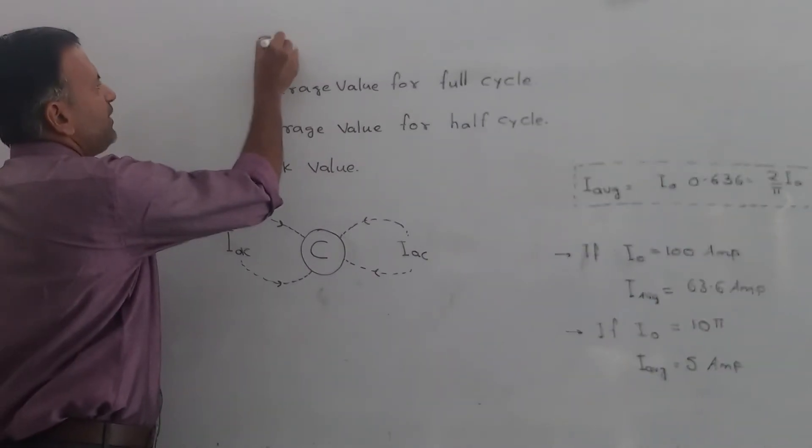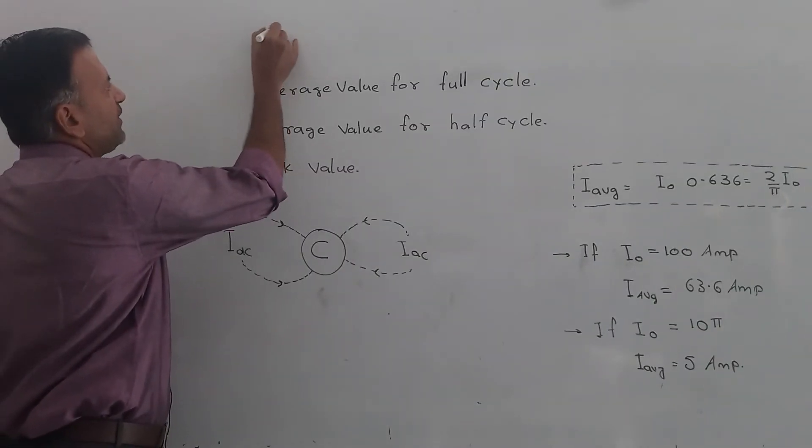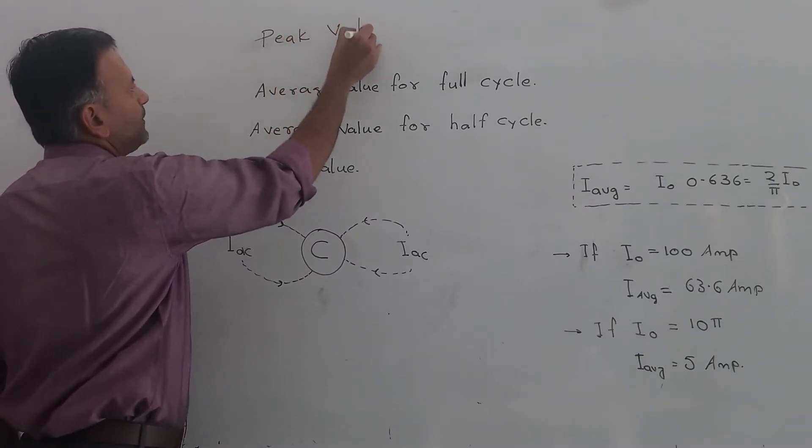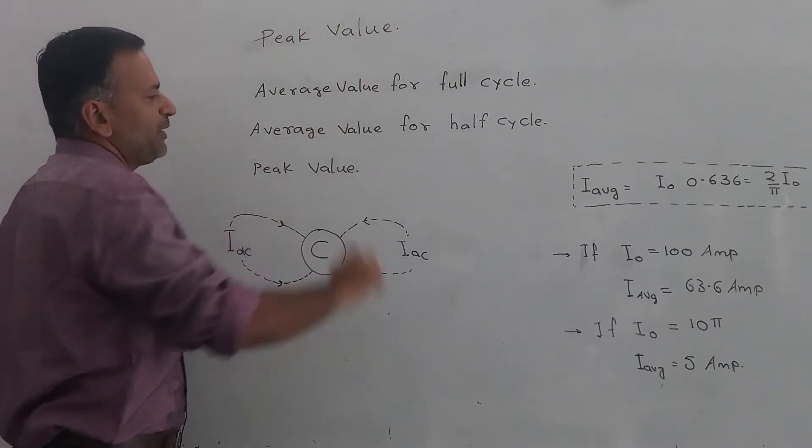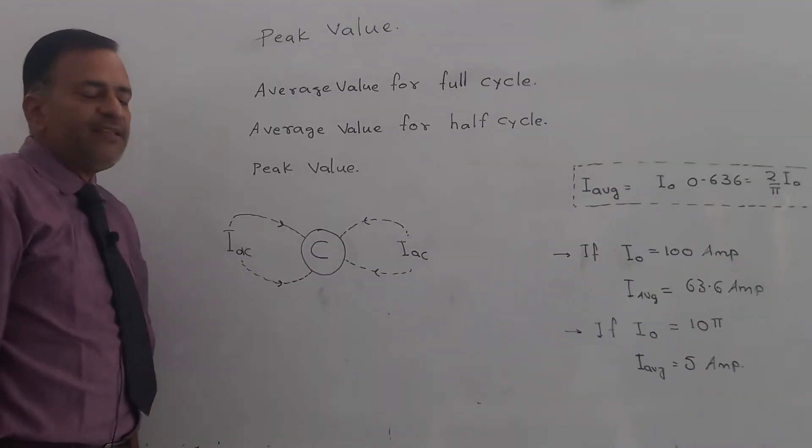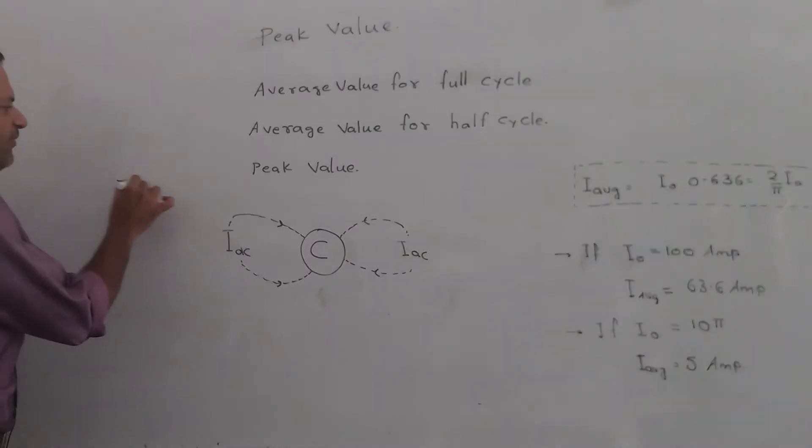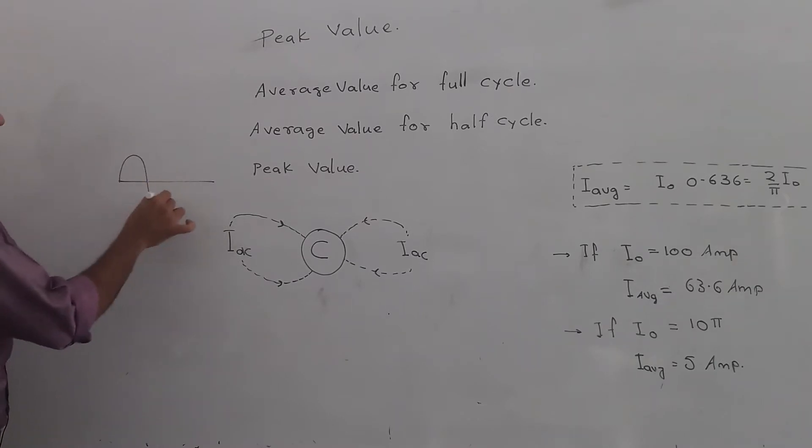First of all comes the peak value. When AC current or AC voltage is given in a circuit, the graph is drawn like this. This is the zero value, and the value that is attained at this point is the peak value. This is represented as I₀, the peak value of current, or ε₀, the peak value of voltage.